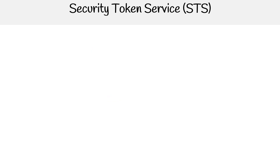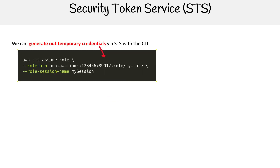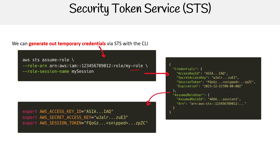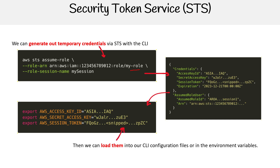We can also use the CLI — it's actually easier to use it with the CLI. We can just assume the role, pass the role ARN that we want to assume, get back credentials, and then load those into our environment variables or our CLI configuration credentials file.